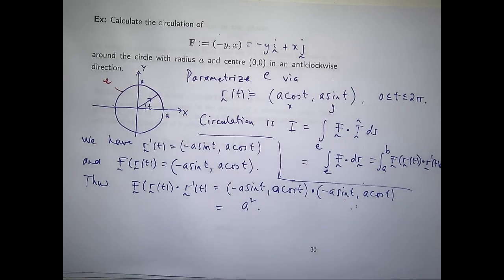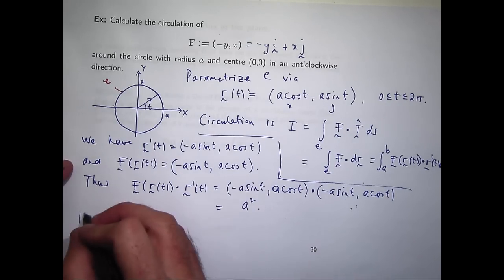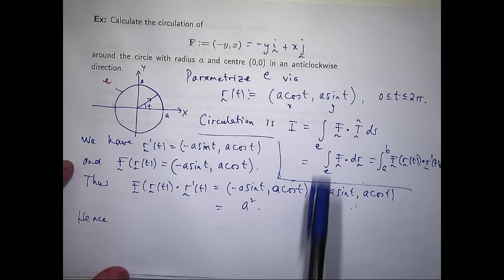Now, so this is a special situation where that dot product is just a constant, doesn't depend on t. But in general, you do get dependency on t here.